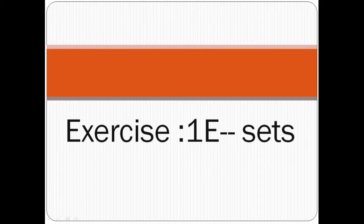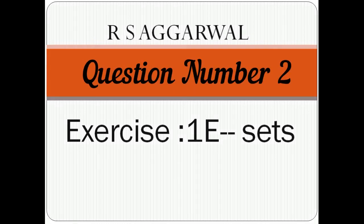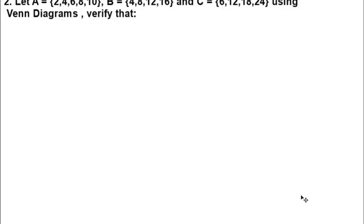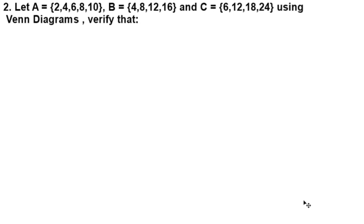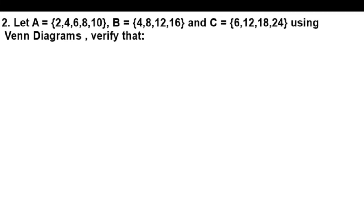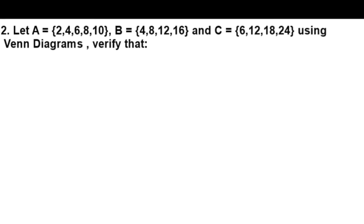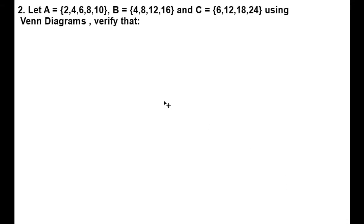This video is the solution of exercise 1E Sets from R, S. Agarwal book, question number 2. Let's start the solution. Let set A be {2,4,6,8,10}, set B be {4,8,12,16}, and set C be {6,12,18,24}. Using Venn diagrams, verify the given properties.